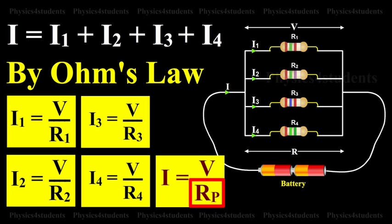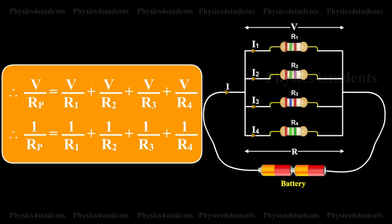Where, Rp is equal to V by R1 plus V by R2 plus V by R3 plus V by R4.